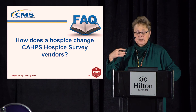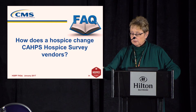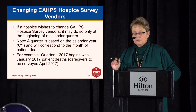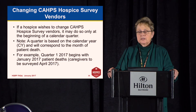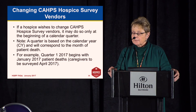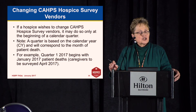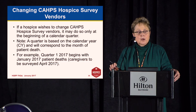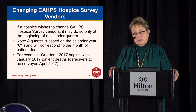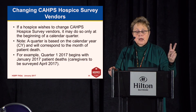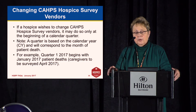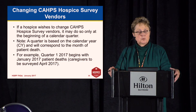You should only change vendors at the beginning of a quarter. Don't try to do it in the middle of a quarter, because you can end up with two different vendors charging you and two different vendors trying to submit data for the data warehouse — this turns into a mess. A quarter is based on the calendar year: January, April, July, October are the beginnings of quarters.